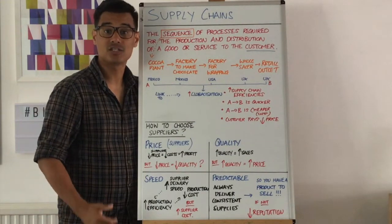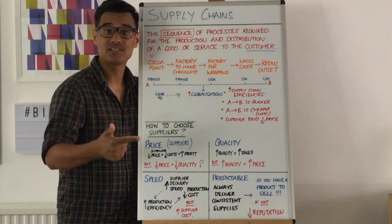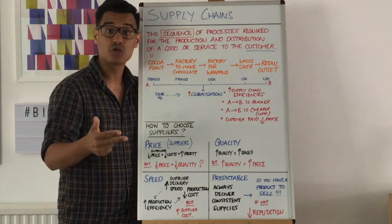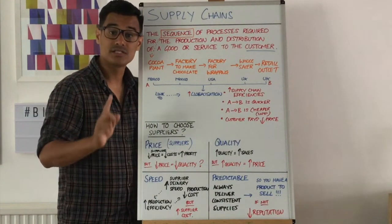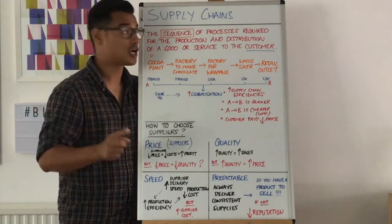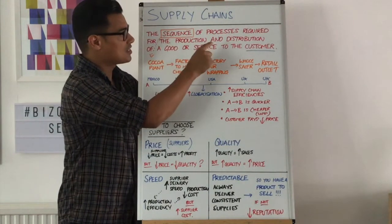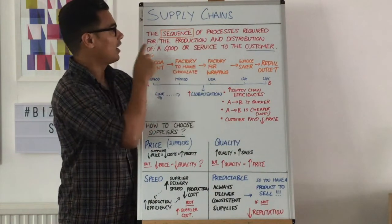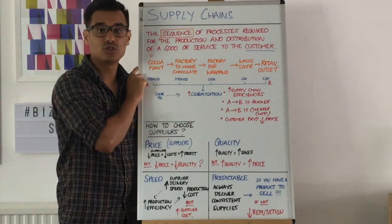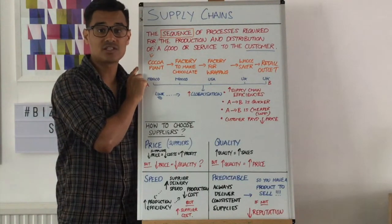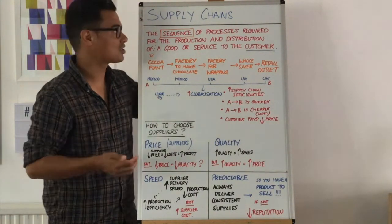This is a process on supply chains. We're going to look at what the definition is, an example of a supply chain, and how you can choose your suppliers. The definition of a supply chain is the sequence of processes required for the production and distribution of a good or service to the end customer, to the final customer.